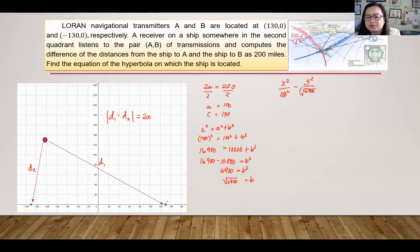Simplifying further, we will have X squared over 10,000 minus Y squared over 6,900 equals 1.